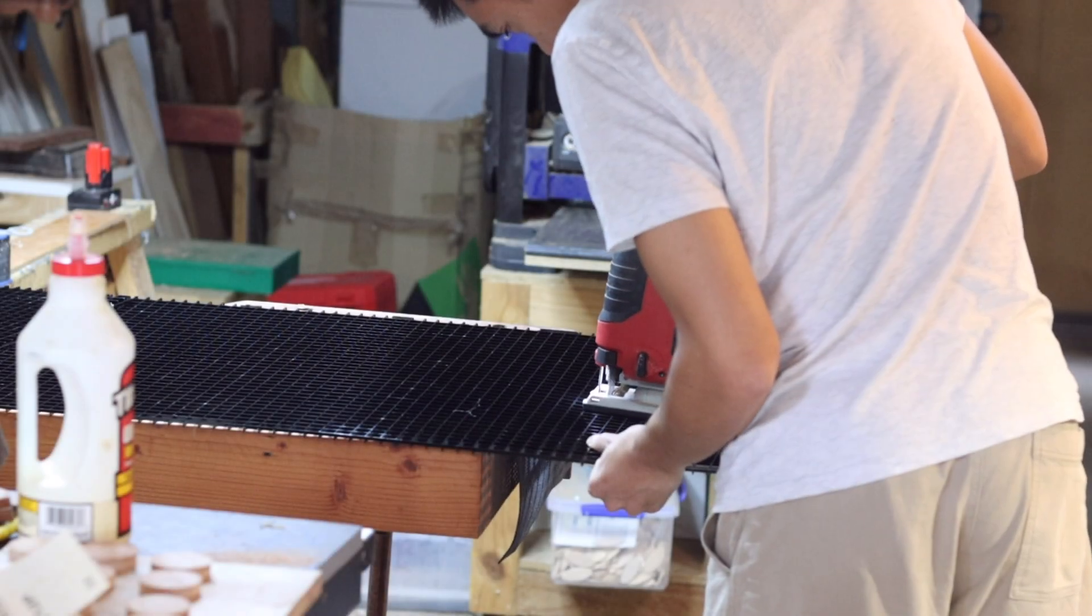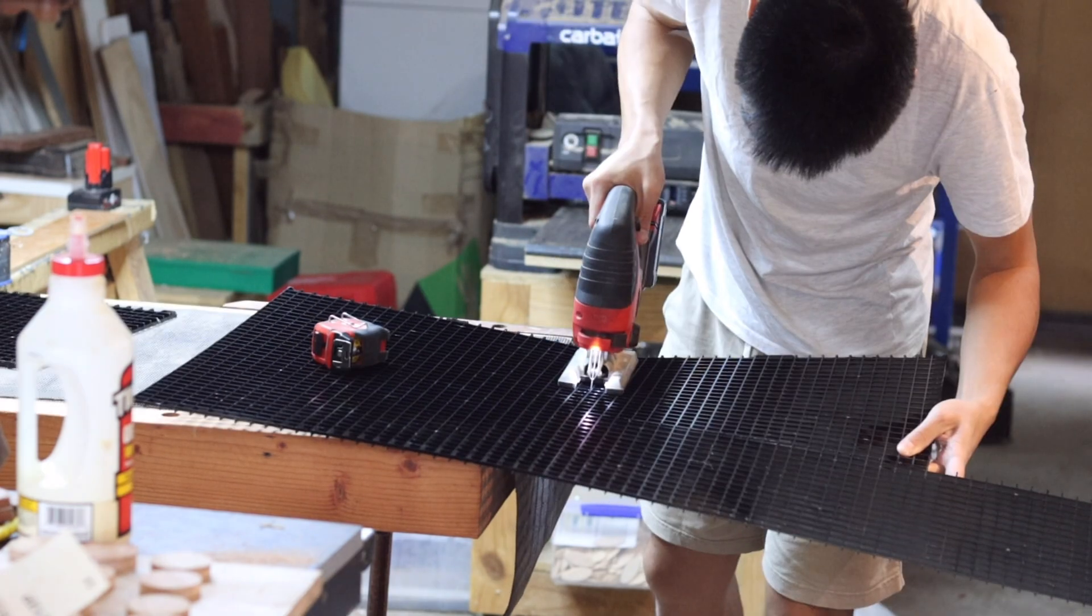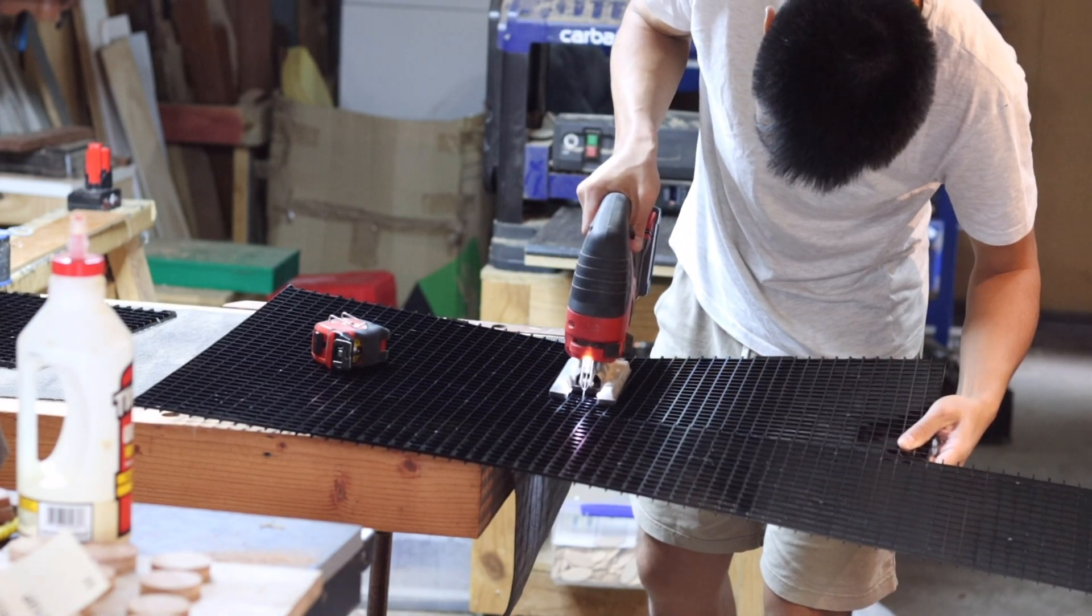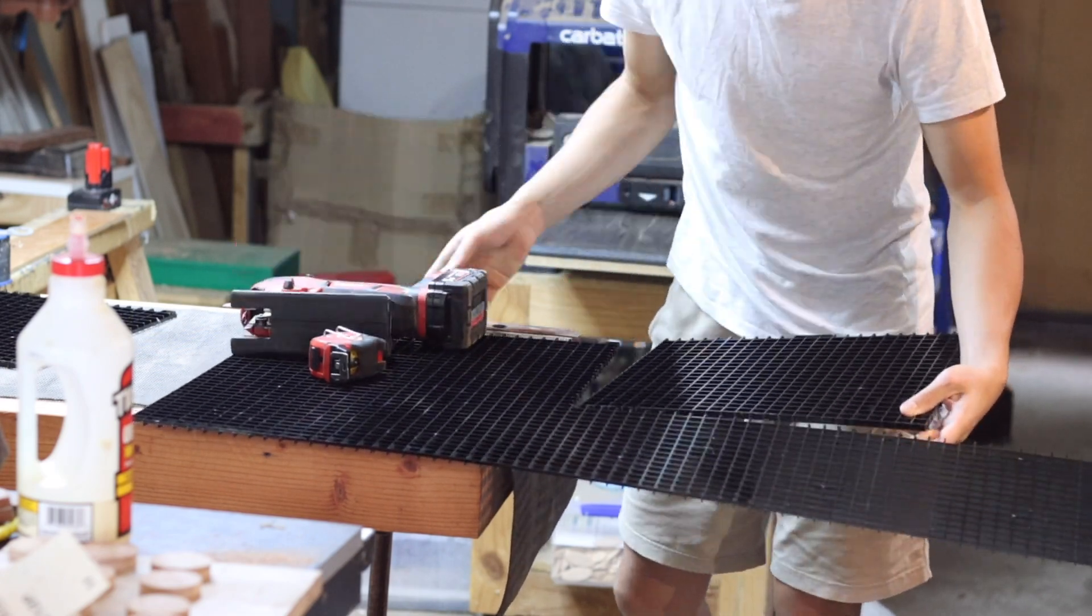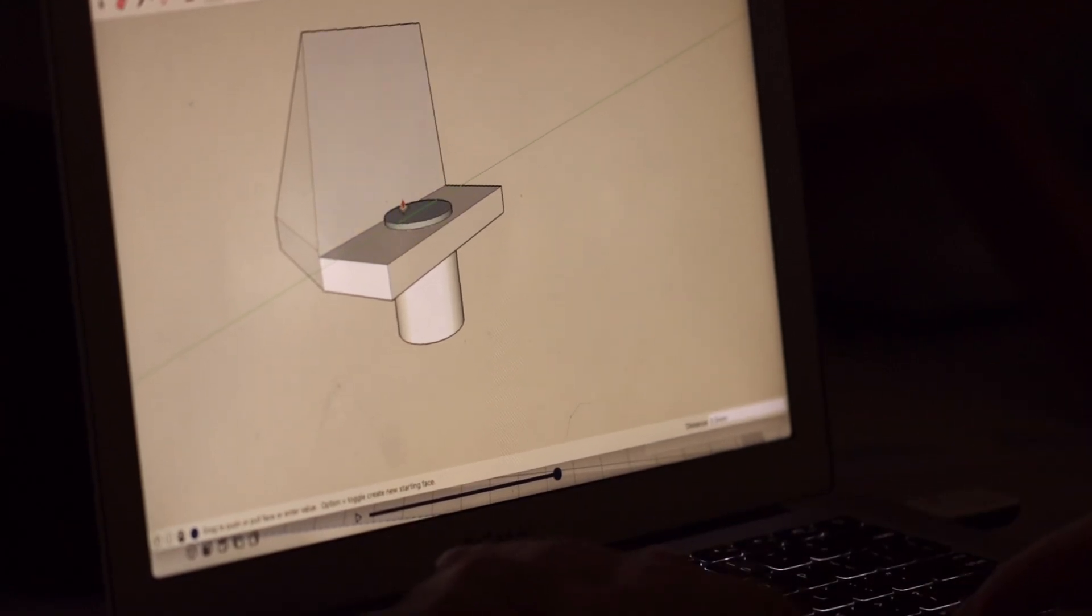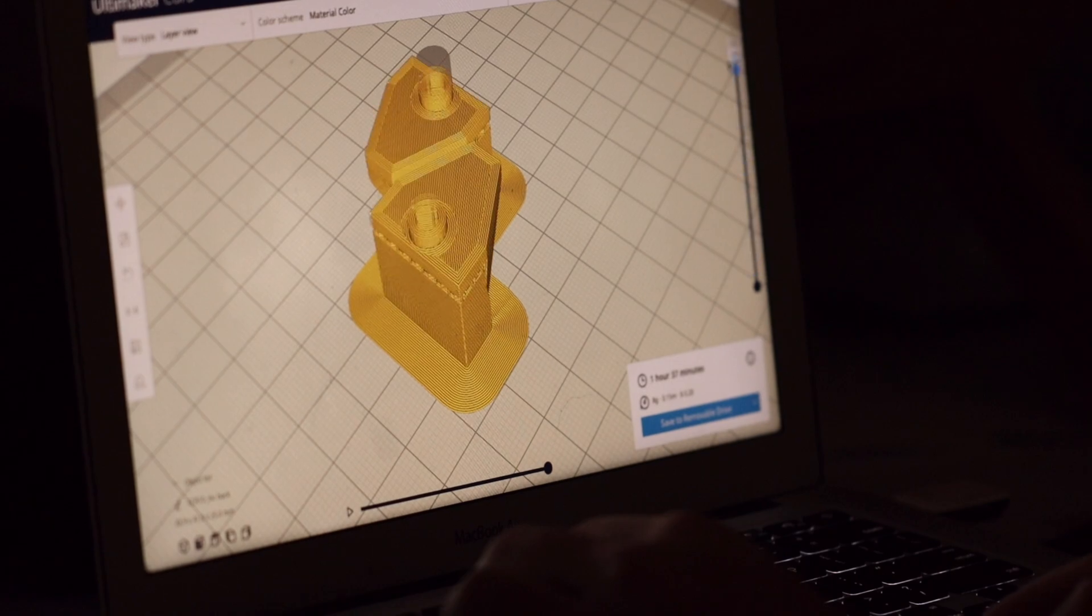All I'm missing now are some shelves. For some reason, this fridge only came with one. I decided to go with black plastic egg crates for the shelves as they are waterproof and allow air to pass through. I also designed and 3D printed some plastic holders to help keep these shelves up.